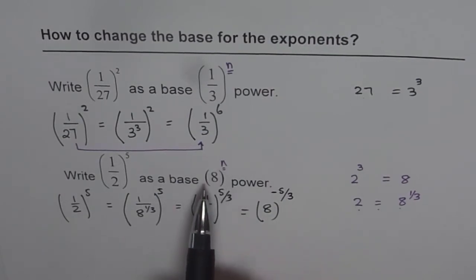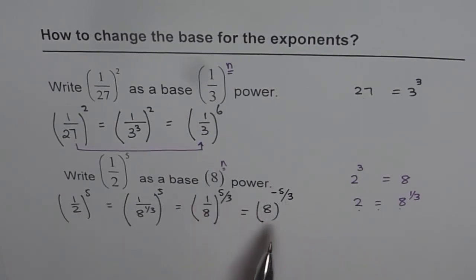So n, the exponent of 8 should be negative 5 over 3 so that it is equal to half to the power of 5.